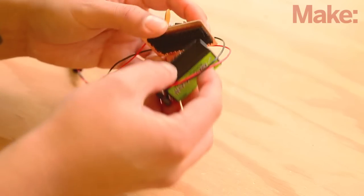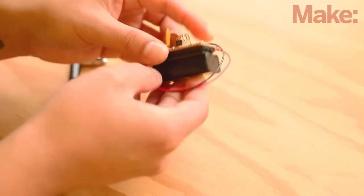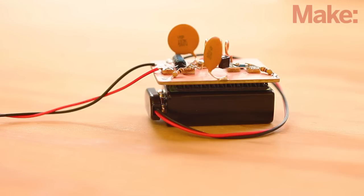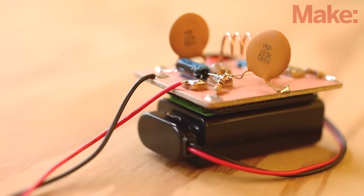To make your transmitter more portable you can attach the 9 volt battery to the back of the circuit board with some velcro or double-sided tape. Depending on your equipment and the broadcast spectrum in your area you should be able to receive transmissions up to 30 feet away.